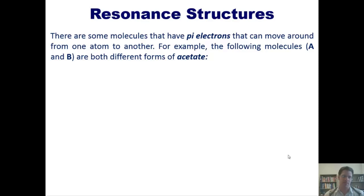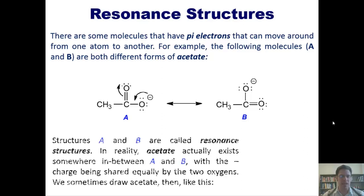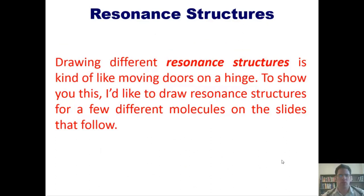Now to resonance structures — some molecules have pi electrons that can move from one atom to another. For example, the two forms of acetate shown here: form A has a negatively charged oxygen with extra lone pairs; if it dumps that negative charge down to form a carbon-oxygen double bond, it pushes pi electrons onto the other oxygen, giving that oxygen a formal negative one charge. These are resonance structures — in reality, acetate exists somewhere in between A and B, with the negative charge shared equally by the two oxygens.